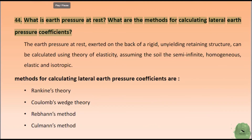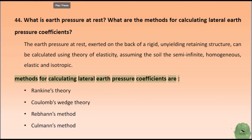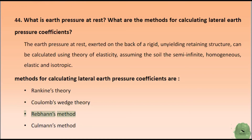What is earth pressure at rest? What are the methods for calculating lateral earth pressure coefficients? The earth pressure at rest, exerted on the back of a rigid unyielding retaining structure, can be calculated using the theory of elasticity, assuming the soil to be semi-infinite, homogeneous, elastic, and isotropic. Methods for calculating lateral earth pressure coefficients are: Rankine's theory, Coulomb's wedge theory, Rebhann's method, and Coulomb's method.